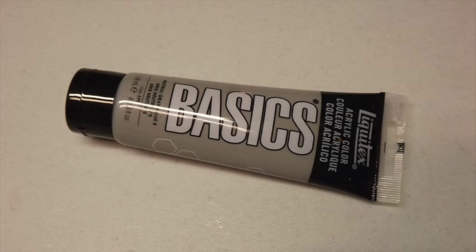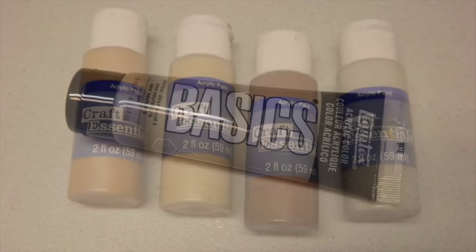Next up we have Liquitex medium gray number five. You can use any medium gray craft acrylic you want. I just went with the Liquitex. It does bond with the Krylon really well so for your base coat you might want to try to pick it up but again any gray craft acrylic will work okay. The Liquitex is the consistency of toothpaste so a single tube I think I paid about three and a half, four dollars for it will last a really long time.